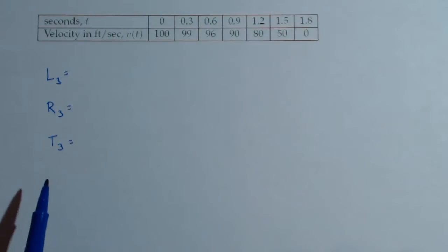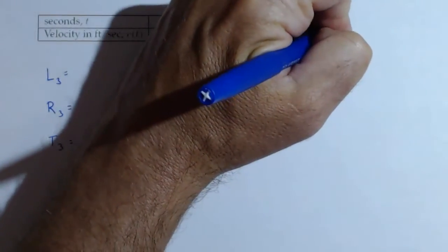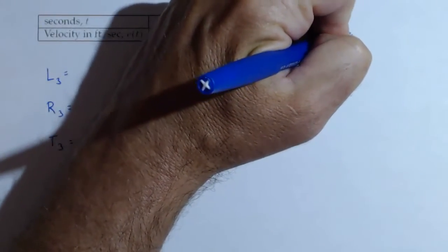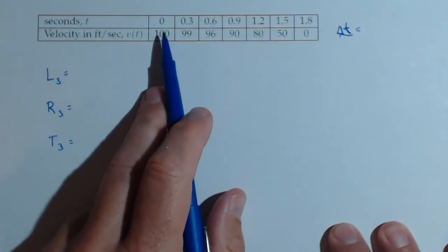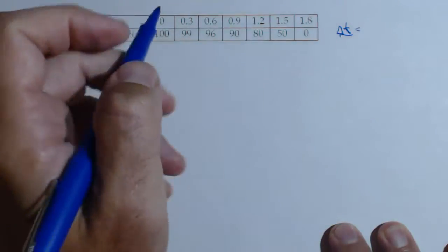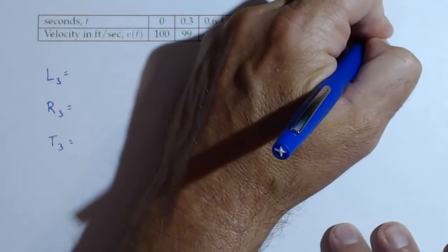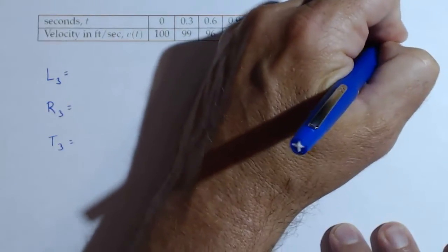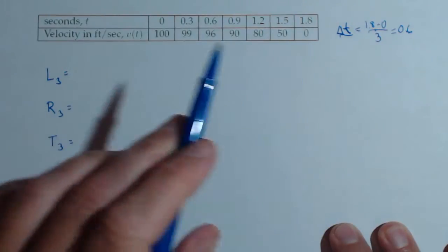We're going to find our approximations for three rectangles, so first thing we want is to get our delta x, or in this case, our delta t, which is the length of our interval divided by the number of rectangles we're going to use. So 1.8 minus 0, we're going to use three rectangles. So for these, we're using 0.6. We're not going to use all the data.